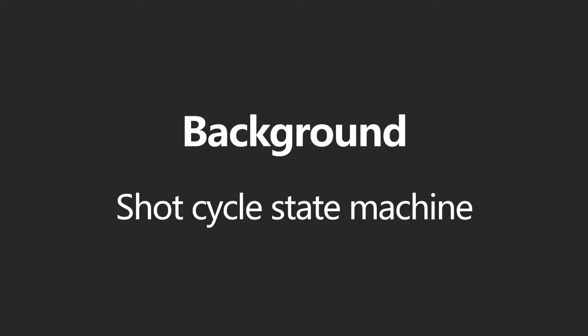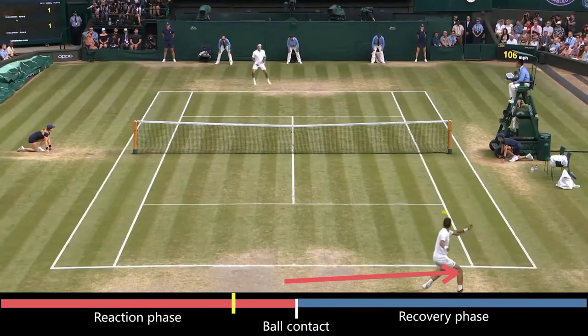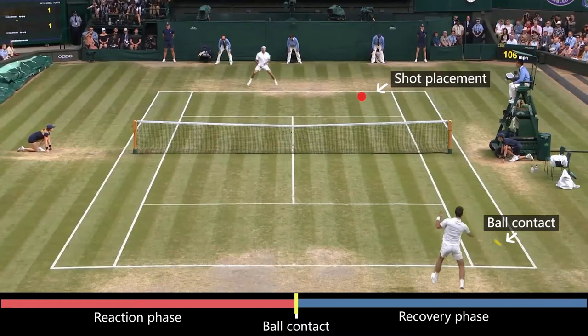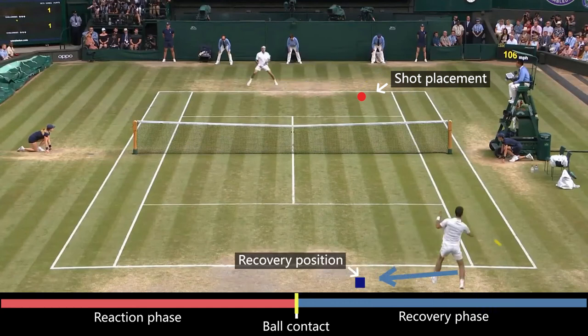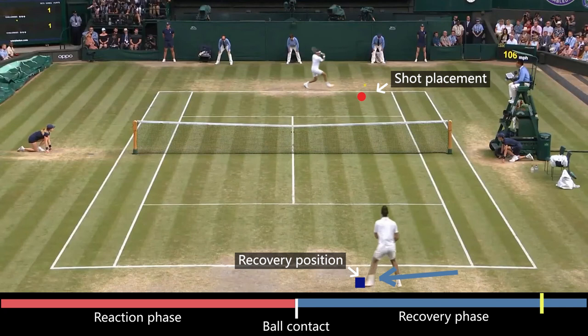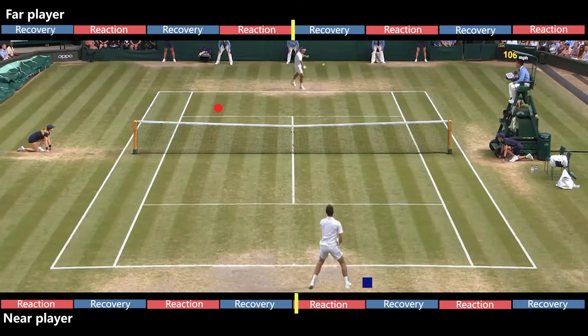In this paper, we make use of the shot-cycle state machine, a key granularity in tennis, in the design of our system. In a shot-cycle, a player first moves to the incoming ball, makes ball contact, and hits the ball to a specific location, shown in red. Note that after ball contact, the player recovers to a new position on the court to prepare for the next shot, shown in blue. The shot-cycle state machine repeats for each of the two players, over and over, until the point ends.